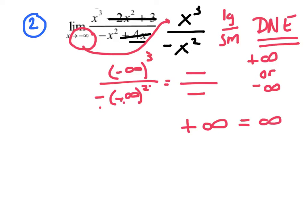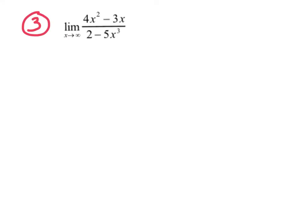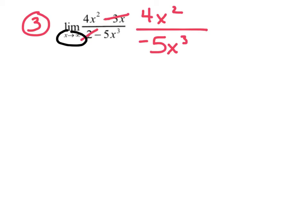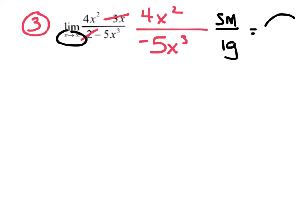Number three: the limit as x approaches infinity of 4x squared minus 3x over 2 minus 5x cubed. Pull out the biggest terms: 4x squared on top, negative 5x cubed on the bottom. The larger one is on the bottom — small over large — and that's my favorite because small over large is always zero.